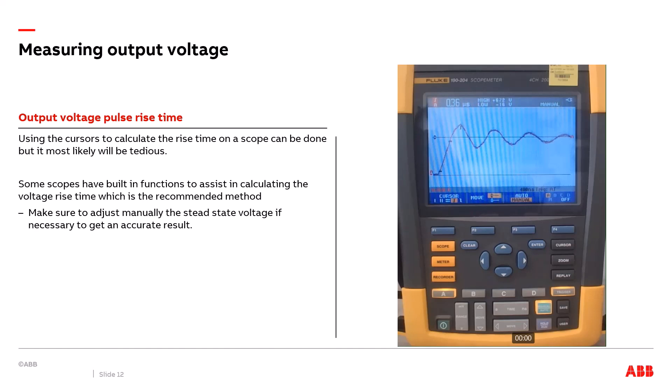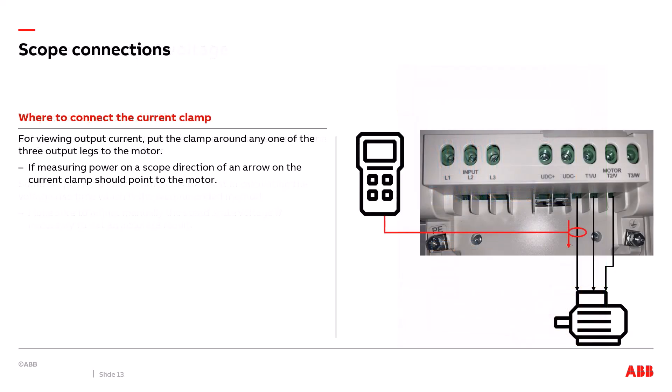The good news is MG1 Part 31 states the minimum rise time of an IGBT shall be 0.1 microseconds. In this case, I'm at 0.37 microseconds — much greater than 0.1 microseconds — showing a good result and that this VFD will not be damaging the motor. Now I'll transition to discuss what the current waveform looks like between the drive and the motor on an oscilloscope.